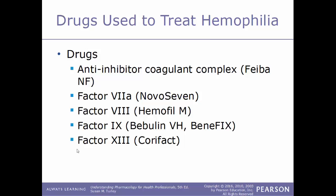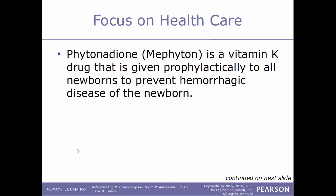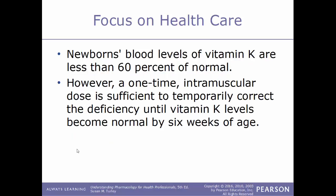Another way to treat patients with hemophilia is by giving them blood transfusions or clotting factors derived from donated blood. The drug phytonadione, known by the trade name Mephyton, is a vitamin K drug given prophylactically to all newborns to prevent hemorrhagic disease of the newborn. This drug is also used to treat bleeding disorders in patients whose livers don't make enough clotting factors 2, 7, 9, or 10, and can be used to treat patients who have received an overdose of an anticoagulant drug. In a newborn, blood levels of vitamin K are less than 60% of normal; however, a one-time intramuscular dose is sufficient to temporarily correct the deficiency until vitamin K levels are normal, usually by the time the newborn is six weeks old.